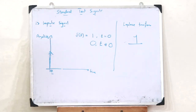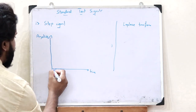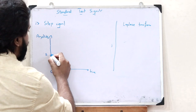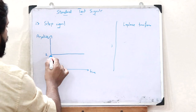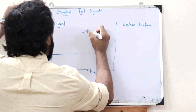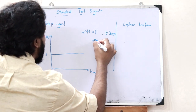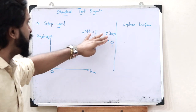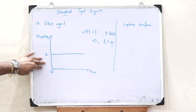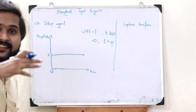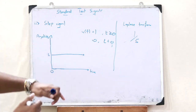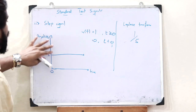The next standard test signal is a step signal. If we assume time 0 and an amplitude of 1, a unit step signal would look like a constant amplitude of 1 as time progresses. We can denote it as u(t) equals 1 when t is greater than or equal to 0, and u(t) equals 0 when t is less than 0. On taking the Laplace transform, we get the Laplace transform of a step signal as 1 divided by s.